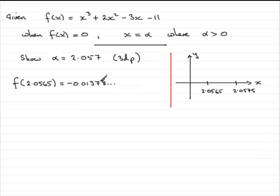And what does that mean? Well, from a graphical point of view, it means that at this point, the y value, y being f of x, is going to be down here, negative, at minus 0.01378.